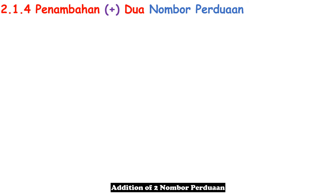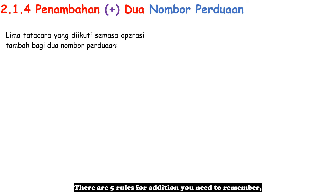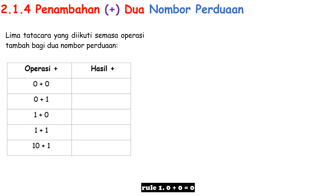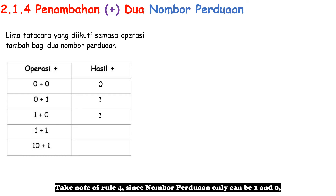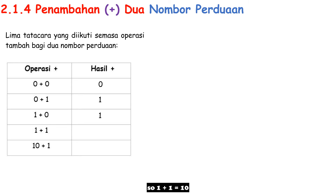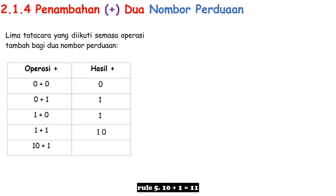Addition of two Nombor Perduaan. There are 5 rules for addition you need to remember. Rule 1: 0 + 0 = 0. Rule 2: 0 + 1 = 1. Rule 3: 1 + 0 = 1. Take note of Rule 4: since Nombor Perduaan can only be 1 and 0, 1 + 1 = 10. Rule 5: 10 + 1 = 11.